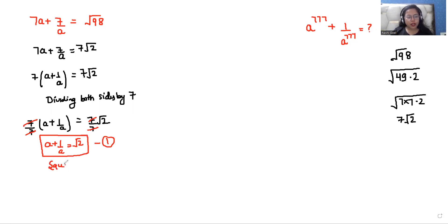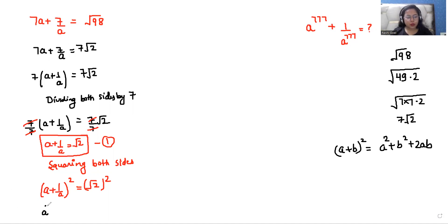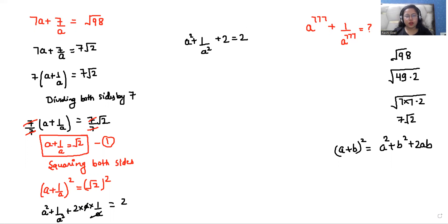Now I'm doing squaring on both sides. So it looks like a plus 1 over a whole square equals root 2 whole square. Now we are using the famous identity: a plus b whole square equals a squared plus b squared plus 2ab. So we can write it as a squared plus 1 over a squared plus 2 times a times 1 over a equals root 2 squared, which is 2.